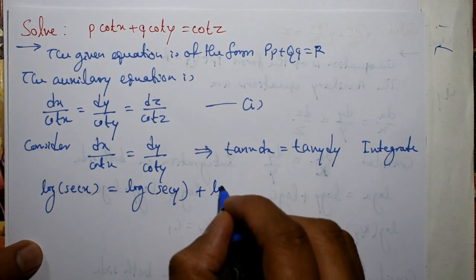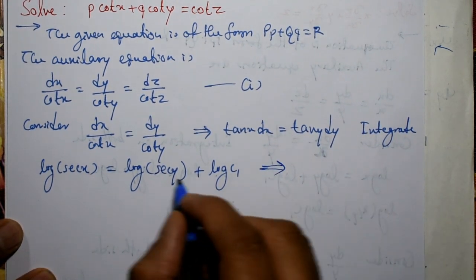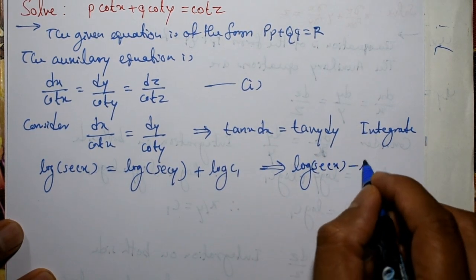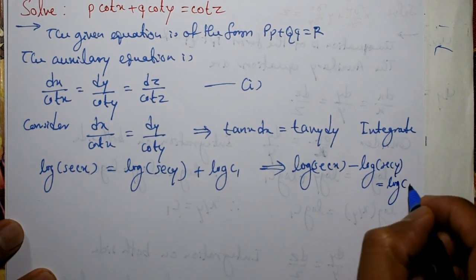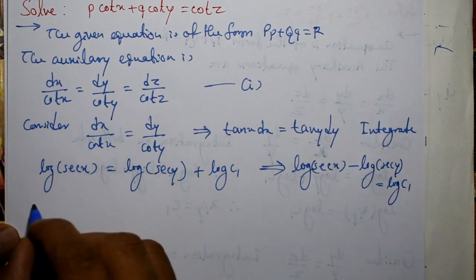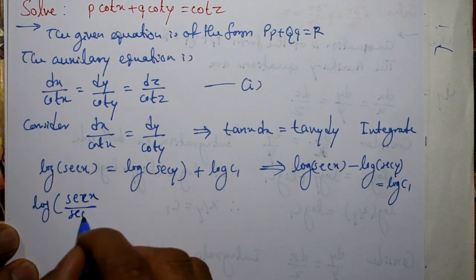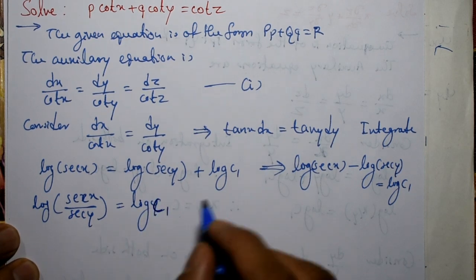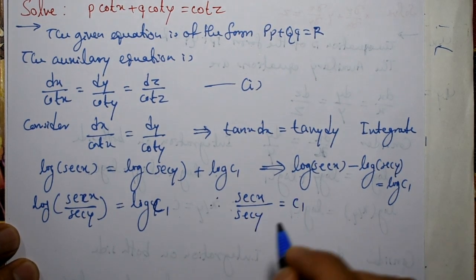Adding the integral constant log(c1), we get log(sec x) = log(sec y) + log(c1). Shifting to the left-hand side: log(sec x) − log(sec y) = log(c1). Using the log property log(a) − log(b) = log(a/b), this gives log(sec x / sec y) = log(c1). Therefore, sec(x) / sec(y) = c1.